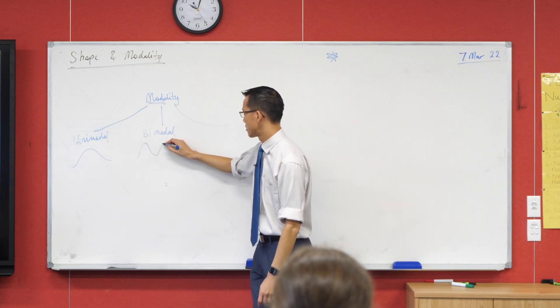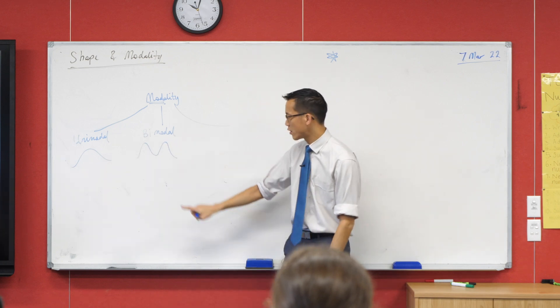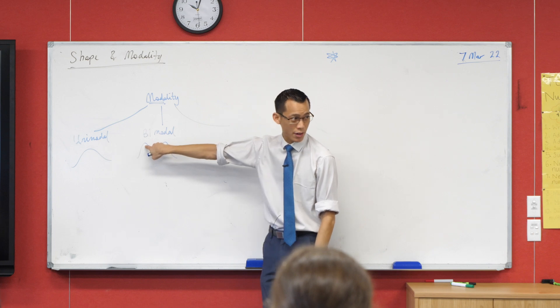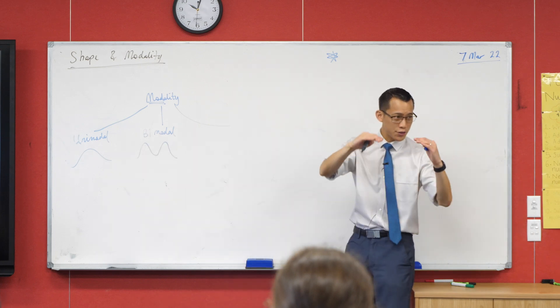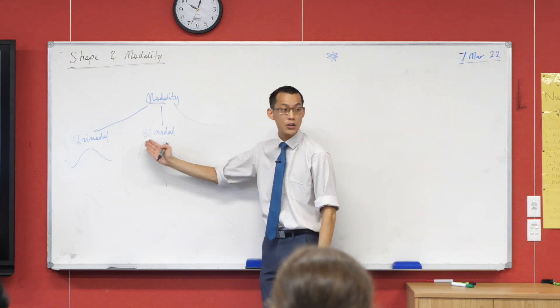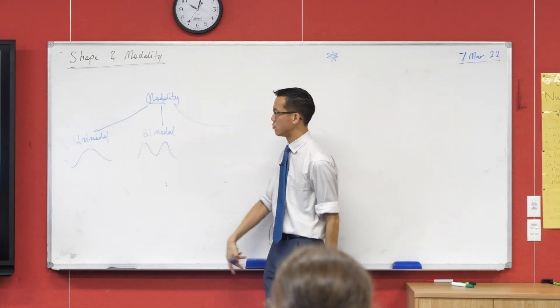Bimodal data might look something like this. It's worth pointing out they don't have to be exactly equal to each other. They might be off just by like a few scores, but if you can see there's a big obvious peak here and there, there's two modes.